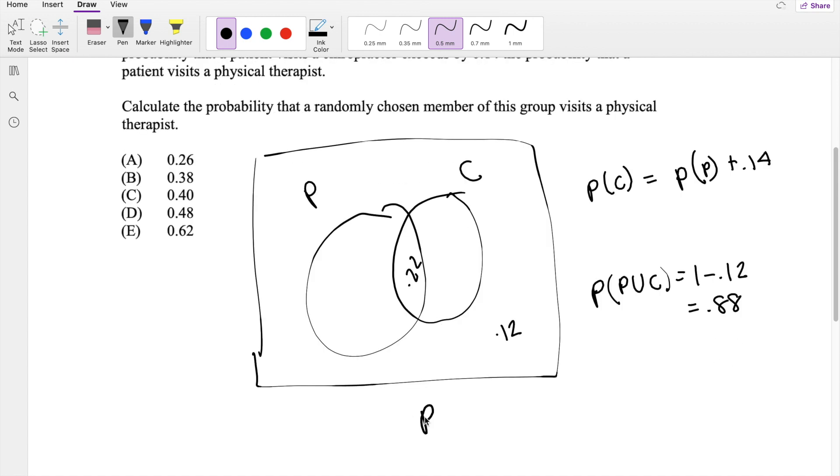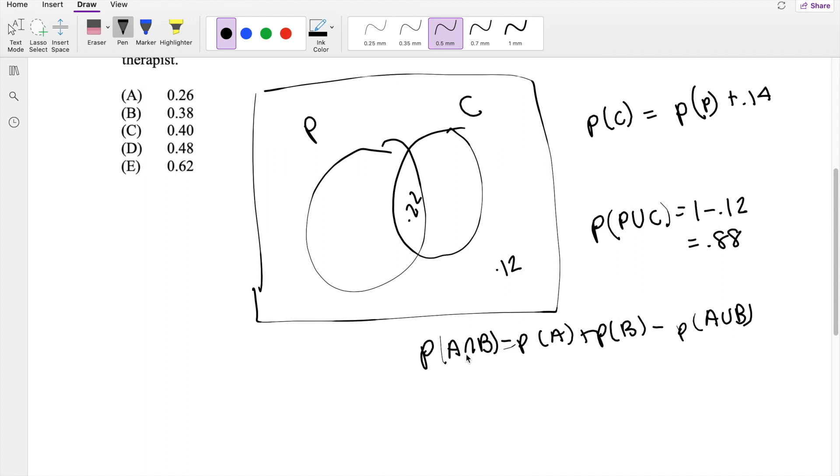And if we know the center, we also have this formula that the probability of A and B is equal to probability of A plus probability of B minus the intersection, I mean minus the union, A union B. So we can use that formula here.